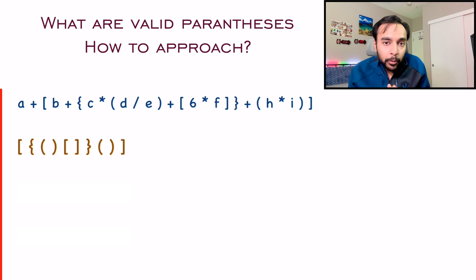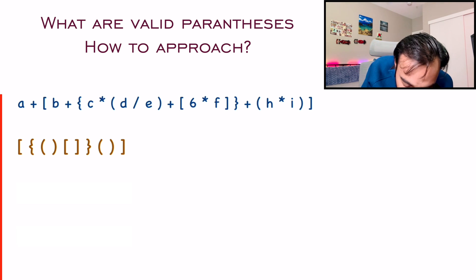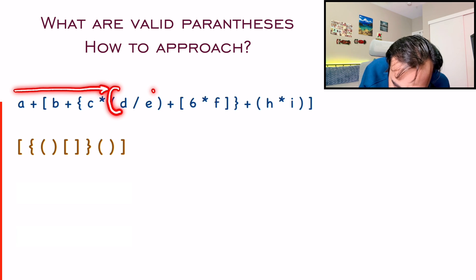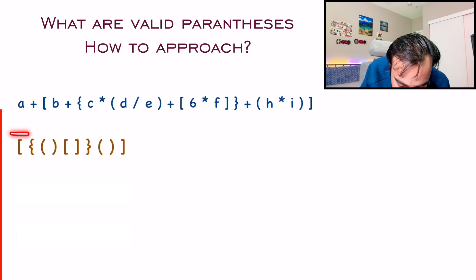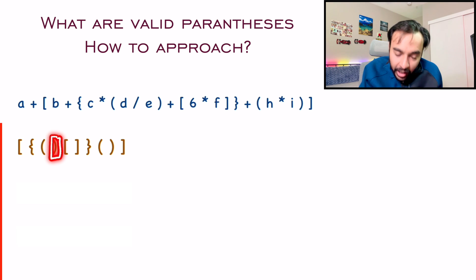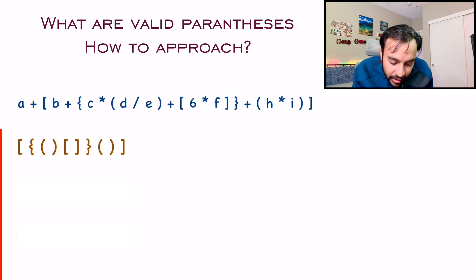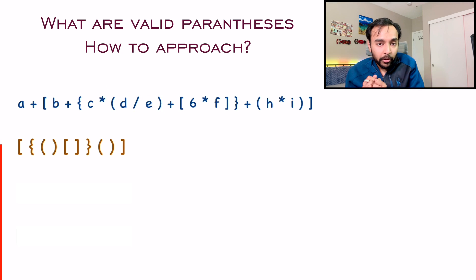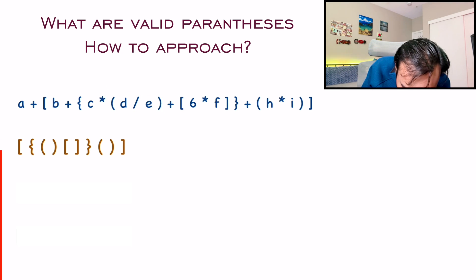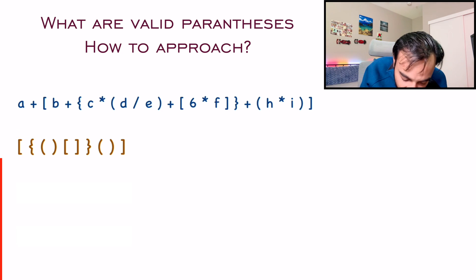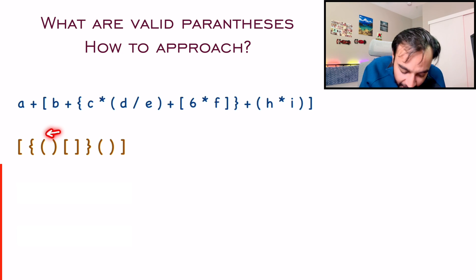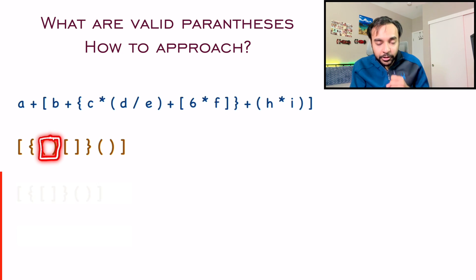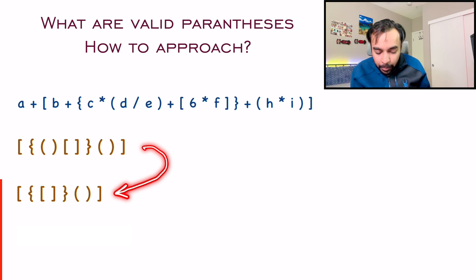If you try to approach this problem in a brute force way, you would traverse the string and try to solve the innermost bracket first. You traverse the string, get all the opening brackets, then when you see a closing bracket, you go back and check where the opening bracket was. For a brute force approach, you move from the front until you get a closing bracket. As soon as you get one, you move backward to find the opening bracket, find this pair, and remove it from your string.